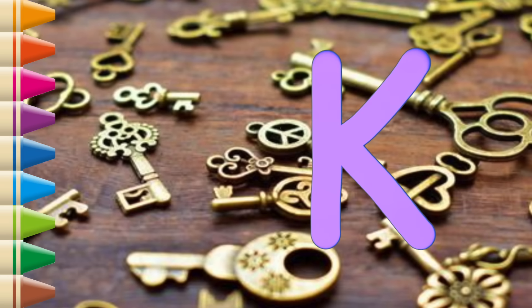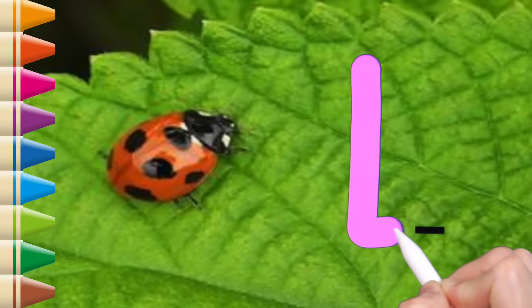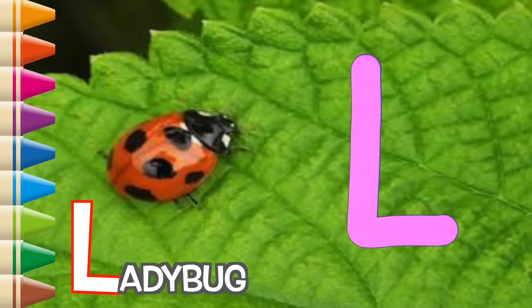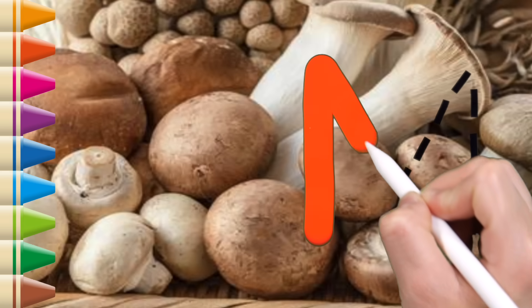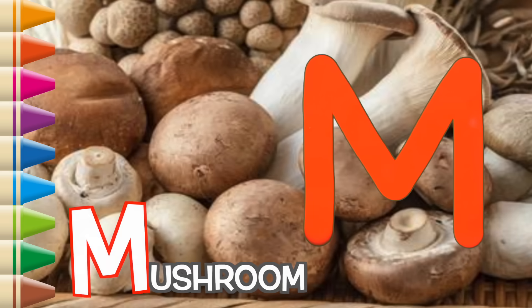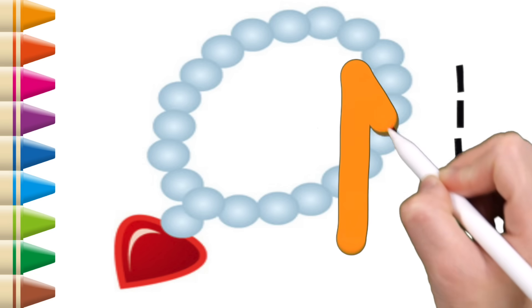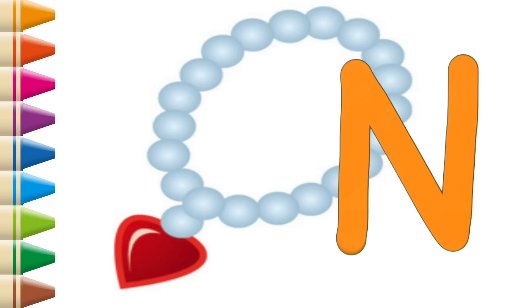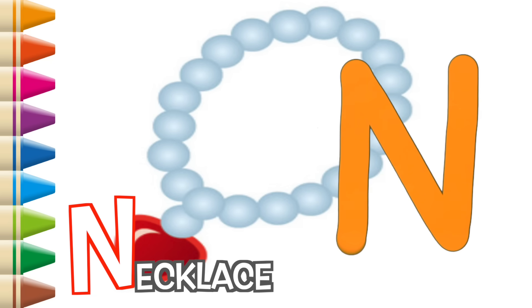K, K, K is for Key. L, L, L is for Ladybug. H, I, J, K, L, M, N, O, P. M, M is for Mushroom. W, X, Y, N, Z. N, N, N is for Necklace.